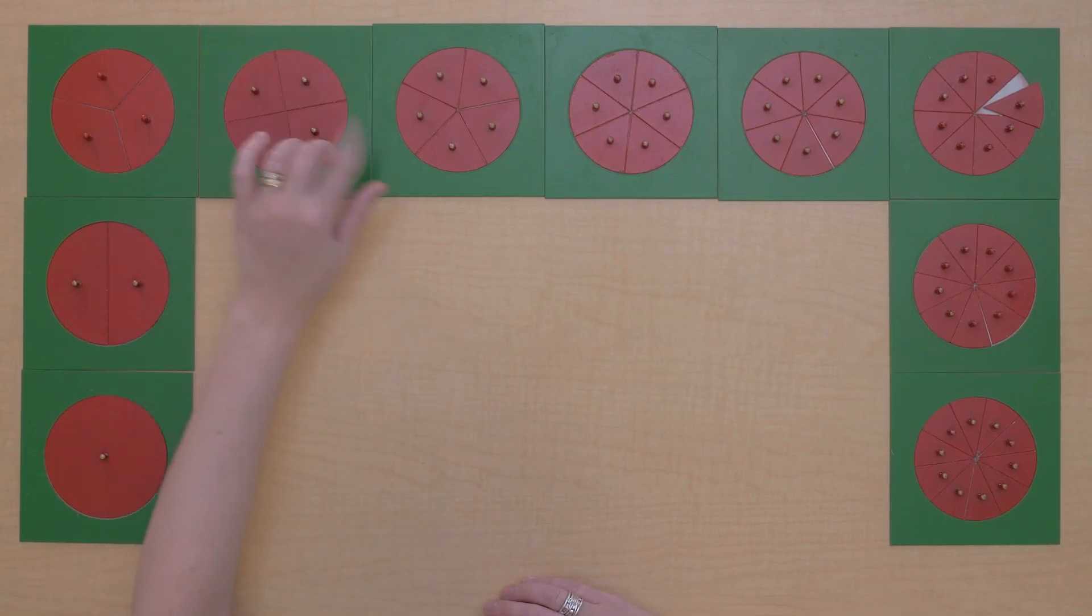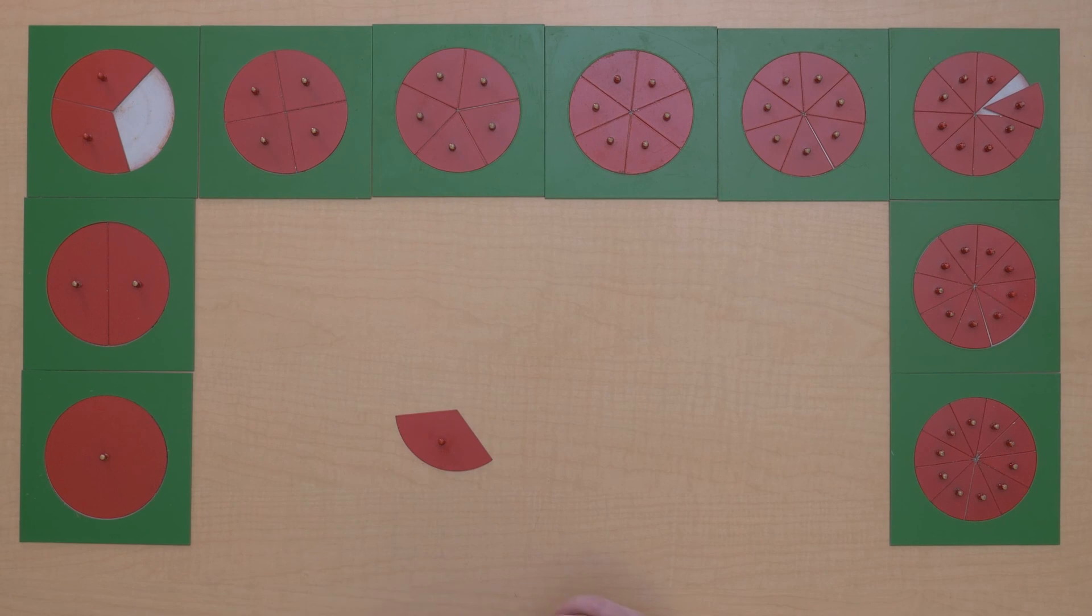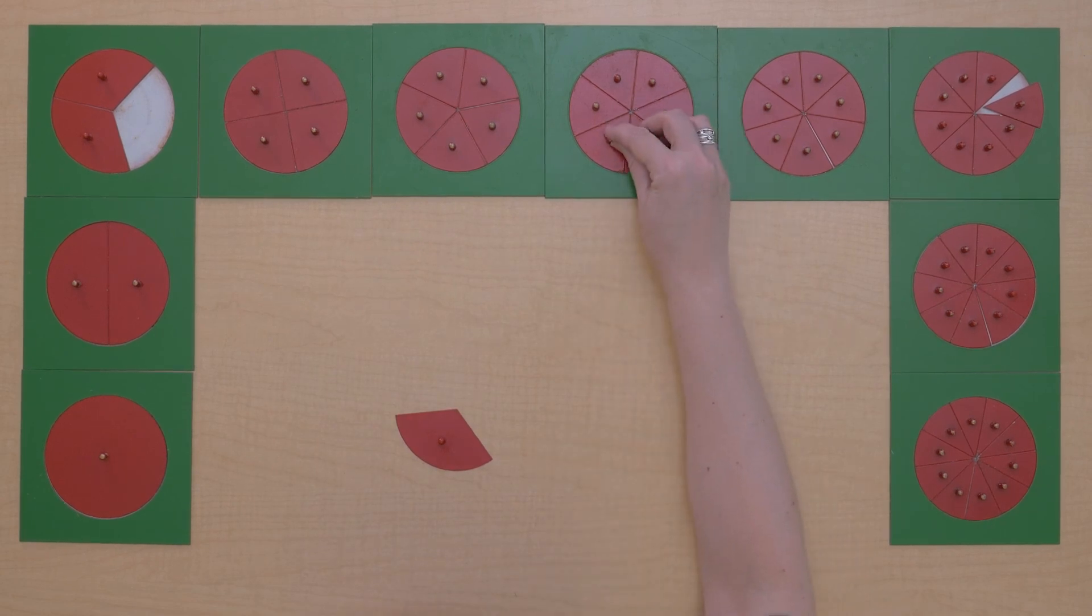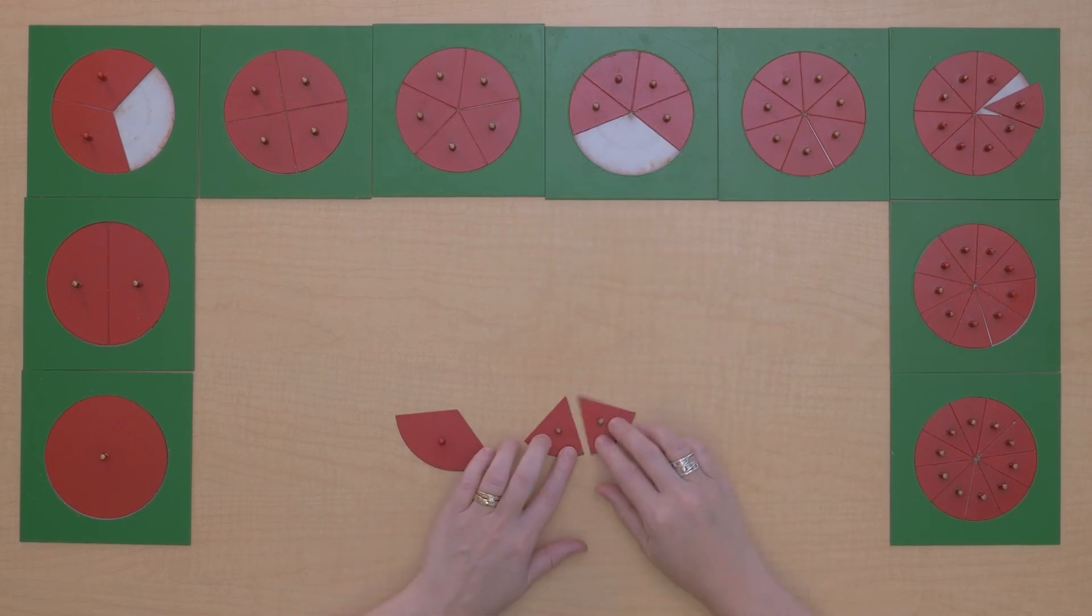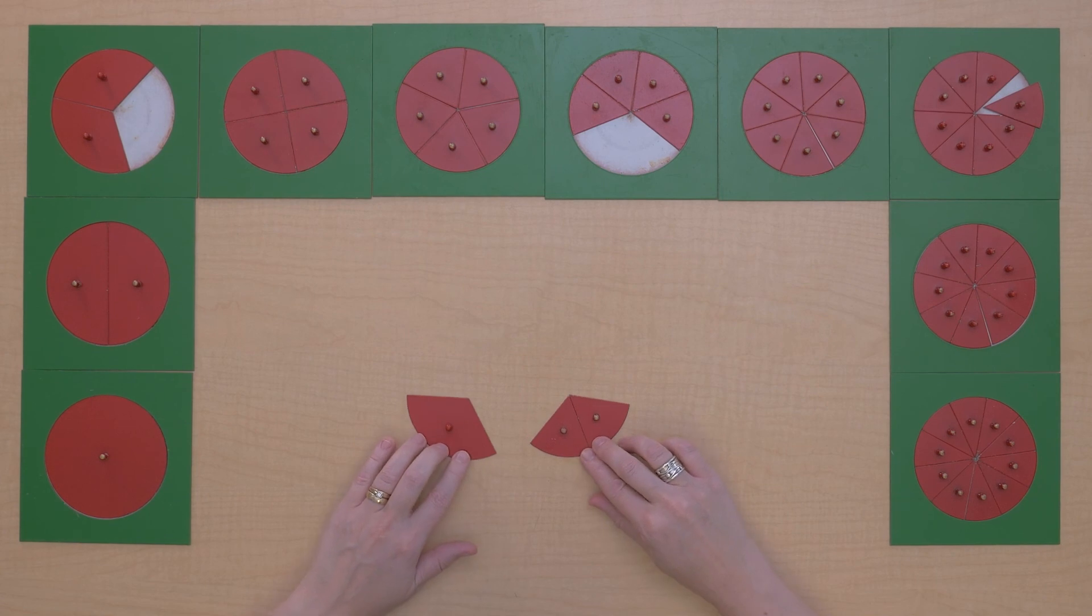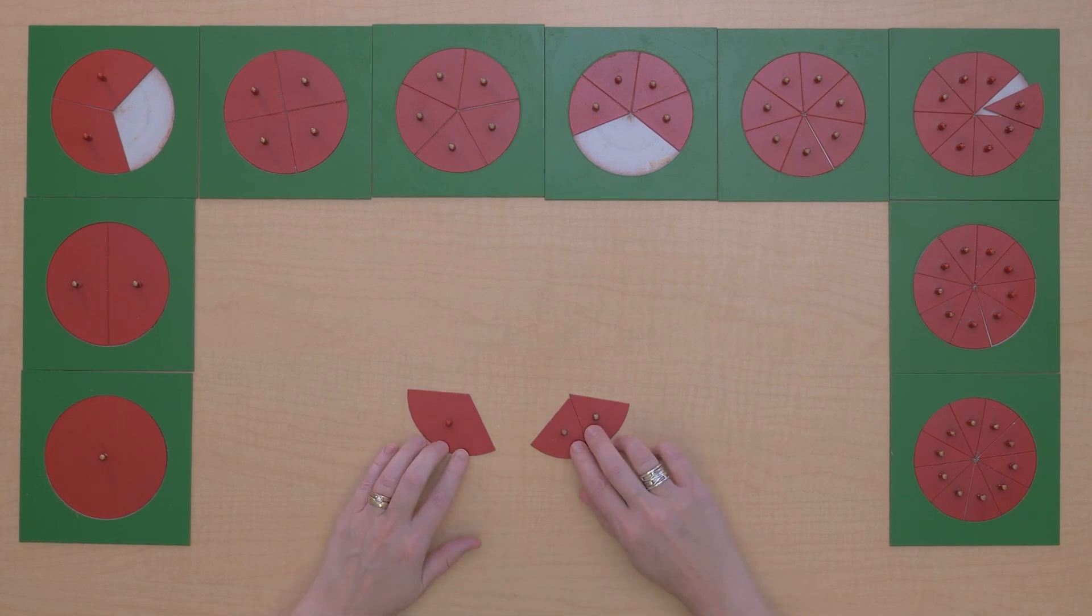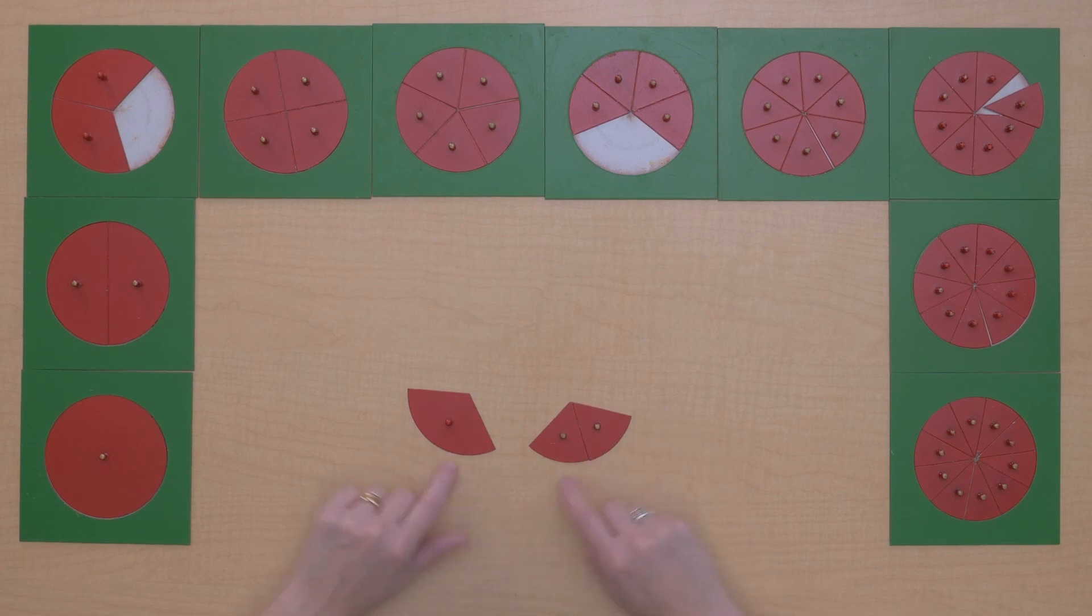Let's do another one. Let's try one-third plus two-sixths. What do we need to do here?